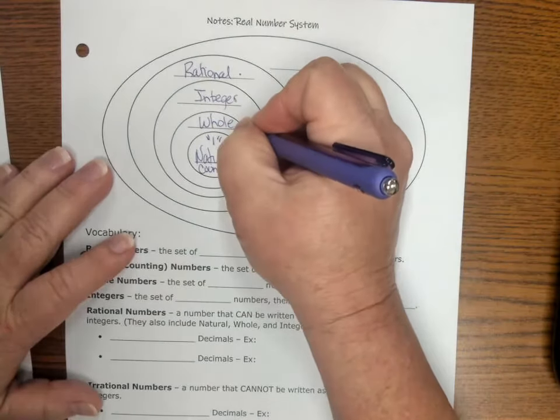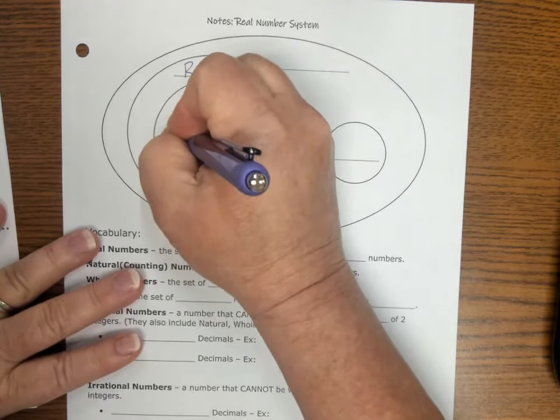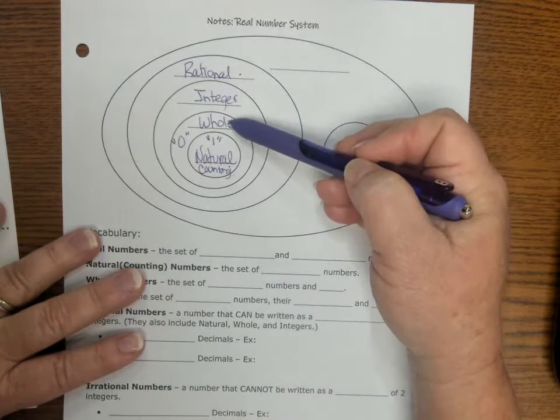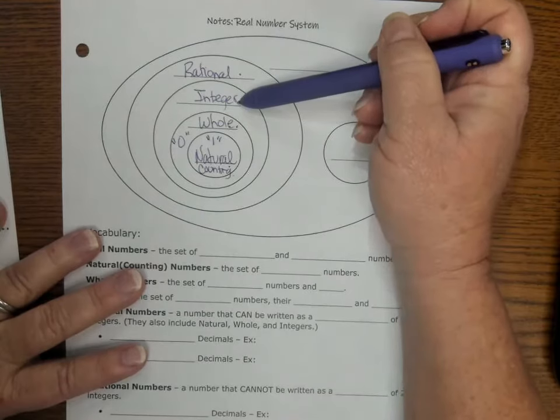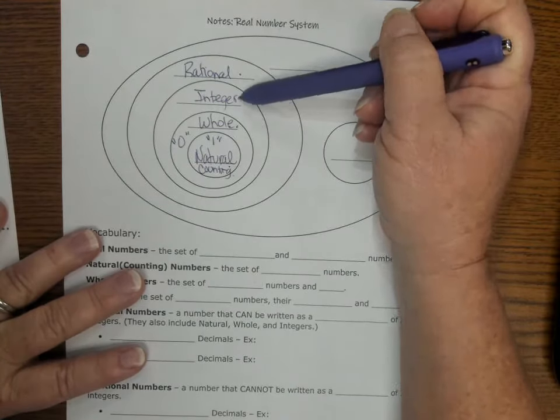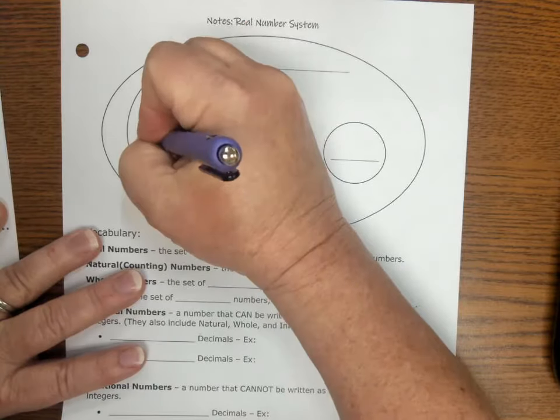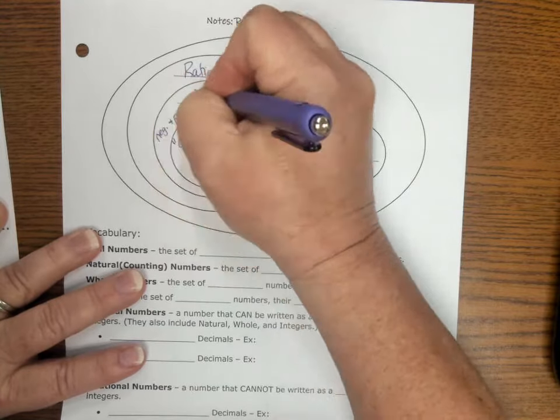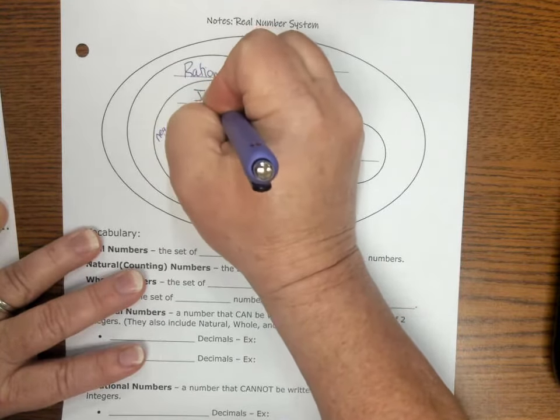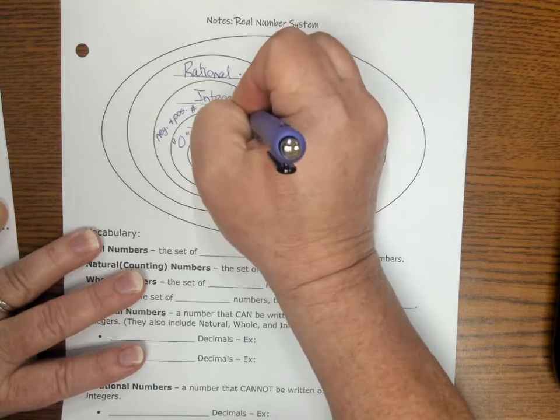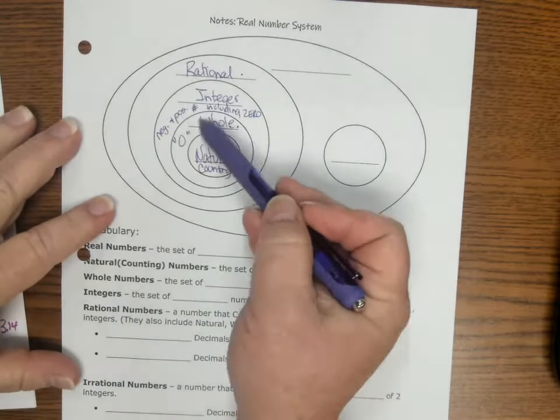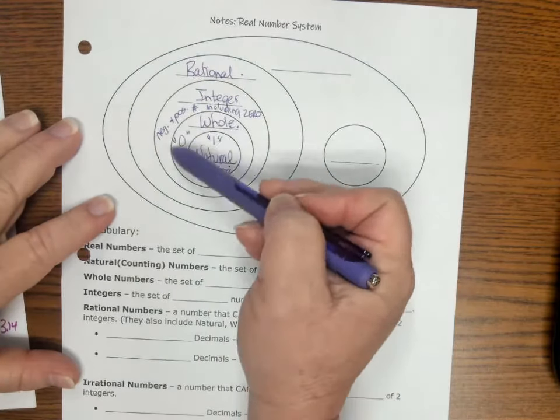Whole numbers, then you learned after natural numbers, you learned that there could be nothing. So whole numbers are all natural numbers, but they also include zero. Then came along in sixth grade integers. And integers are all negative and positive numbers, including zero. So all negative and positive whole numbers, including zero. So if you notice, the integers include all whole numbers, all natural numbers. Then you get the plus, the negative numbers.